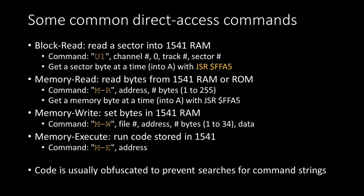What we're going to be concerned with is something called direct access commands, which give you lower-level access to the drive for specialized things that copy protection routines would need. There are four of interest: the block read command (string 'U1'), memory read ('M-R' — reads bytes out of the RAM or ROM of the floppy drive), memory write ('M-W' — pushes data directly into the 1541's RAM), and memory execute ('M-E' — kicks off code you've written to the drive). This kind of command string is almost always obfuscated to prevent people from searching for them.